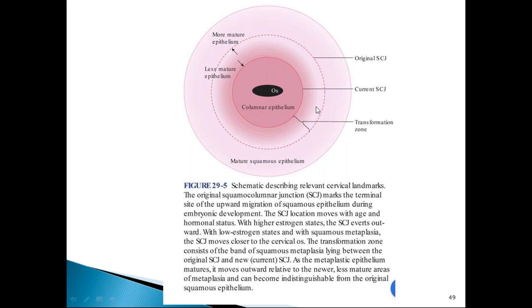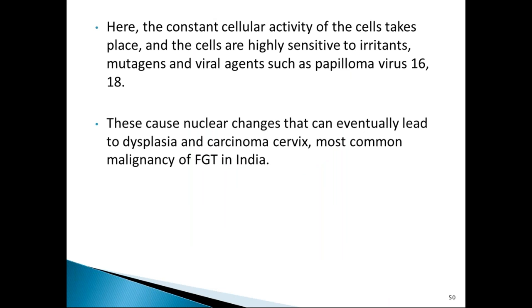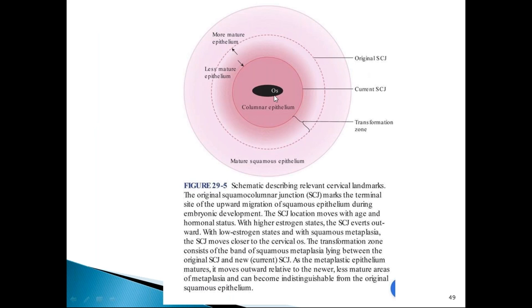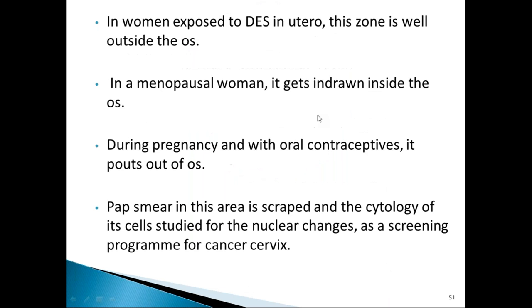The transformation zone is significant because rapid cellular activity occurs in this metaplastic area, making it highly sensitive to irritants, mutagens, and viruses like HPV 16 and 18, which cause dysplastic changes in pre-invasive lesions and cervical malignancy. This is the most common site for cervical malignancy. Therefore, the Pap smear screening test for cervical cancer is taken from the squamocolumnar junction. In menopausal women the SCJ is drawn inward; during pregnancy it everts outward; in DES-exposed women the SCJ lies outside.